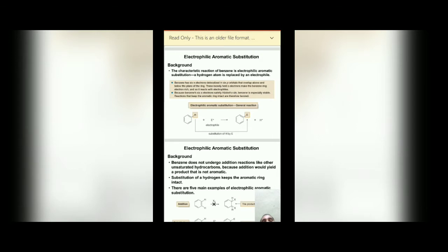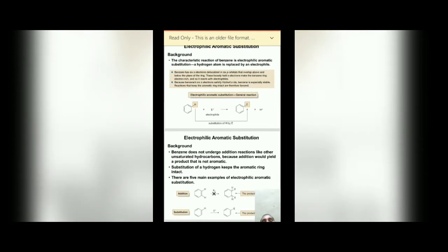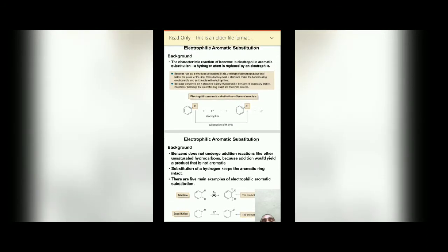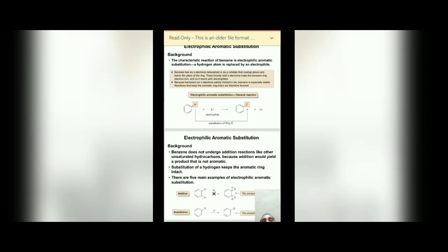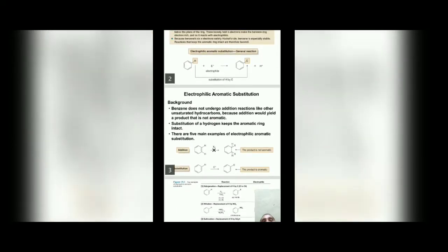The pi electron cloud above and below the benzene ring makes it an electron-rich moiety, which can attract electrophiles — electron-deficient species. Benzene has six pi electrons delocalized in six pi orbitals overlapping above and below the plane of the ring. These loosely held pi electrons make benzene electron-rich, and since benzene's six pi electrons satisfy Hückel's rule, it is especially stable. Reactions that keep the aromatic ring intact are therefore favored.